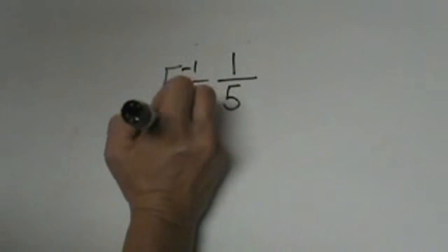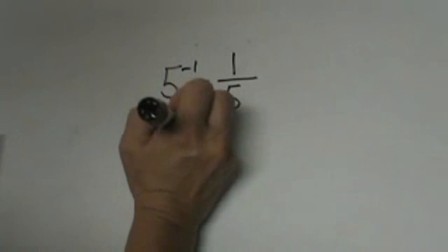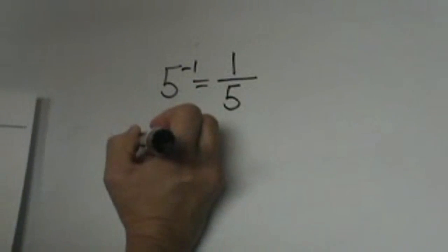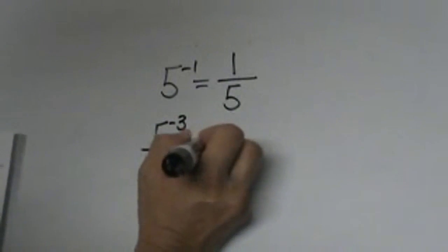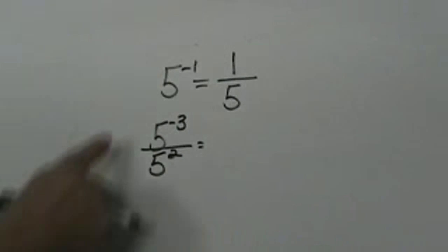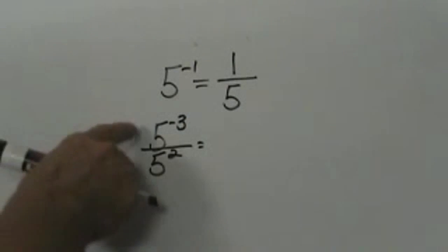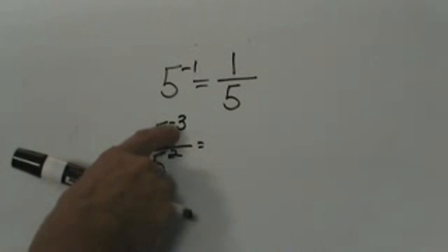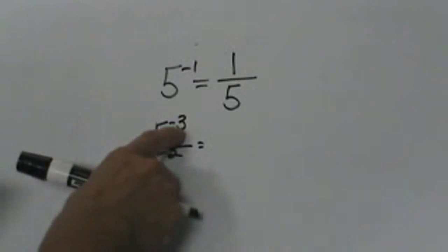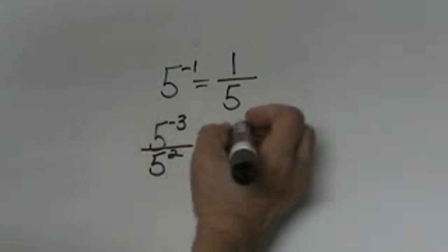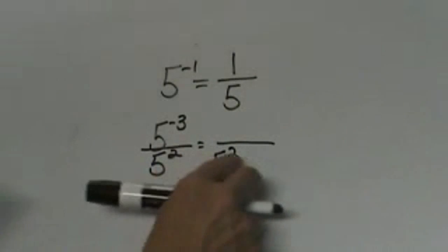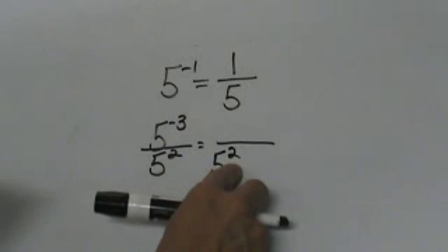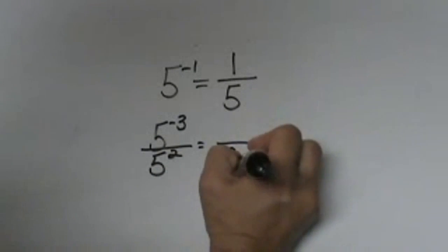Let's look at the second example. We have five to the negative third over five squared — a positive two. Which one's on the wrong level? Well, five to the negative third is upstairs and it needs to go downstairs. So we're going to move it to the bottom downstairs, but the five squared is going to stay downstairs because it's a positive exponent.